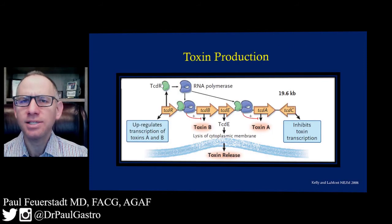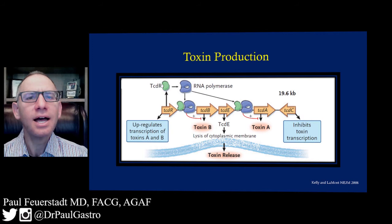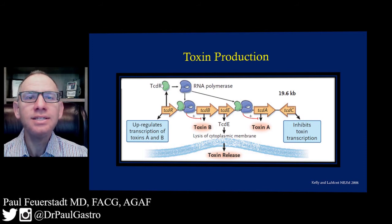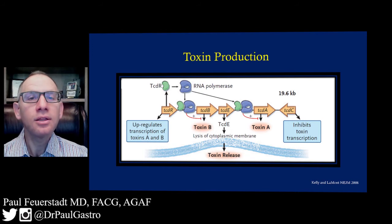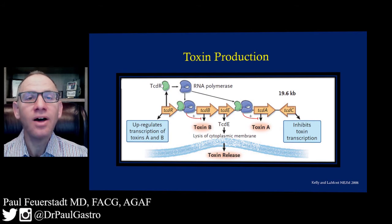How does C. difficile attack us? This slide shows the gene loci for the proteins involved in the pathophysiology of C. difficile. TCDA and TCDB code for toxin A and toxin B respectively. Toxin A is an enterotoxin; toxin B is a cytotoxin. TCDC is an inhibitor protein of toxins A and B — it inhibits their production. A mutation to TCDC results in the NAP1/BI/027 strain, the so-called hypervirulent strain, as inhibiting the inhibitor yields more toxin A and toxin B. TCDR is an enhancer of toxins A and B, and TCDE is involved in membrane lysis.